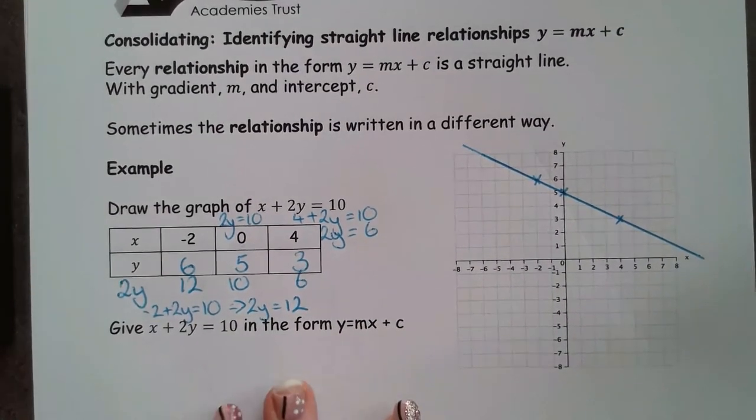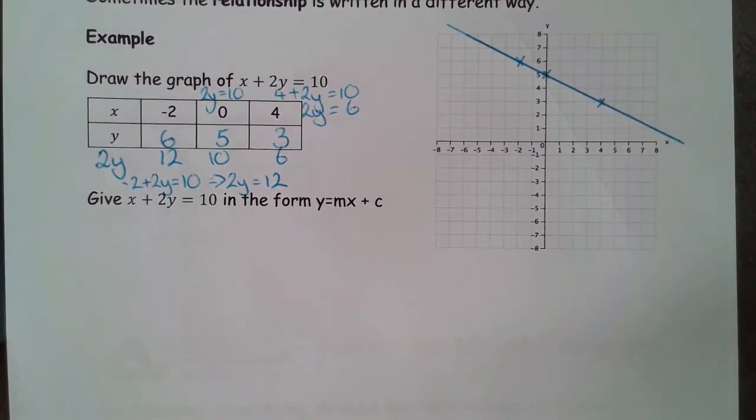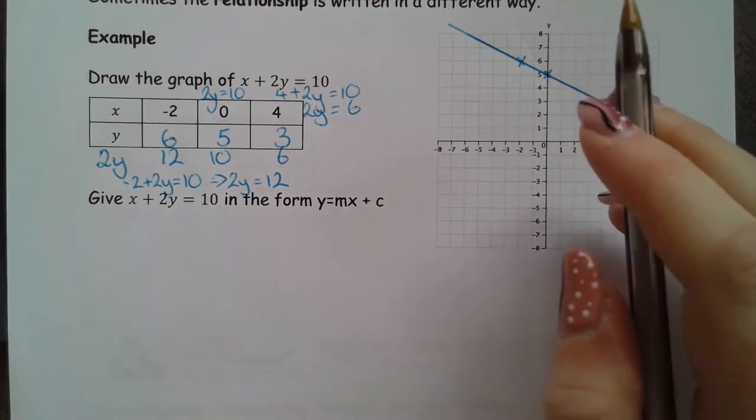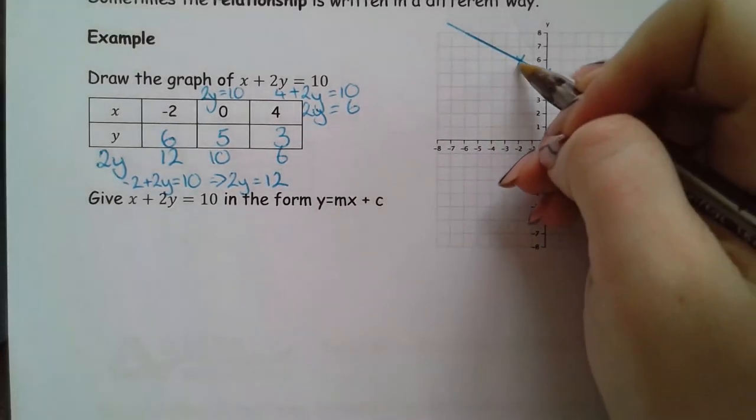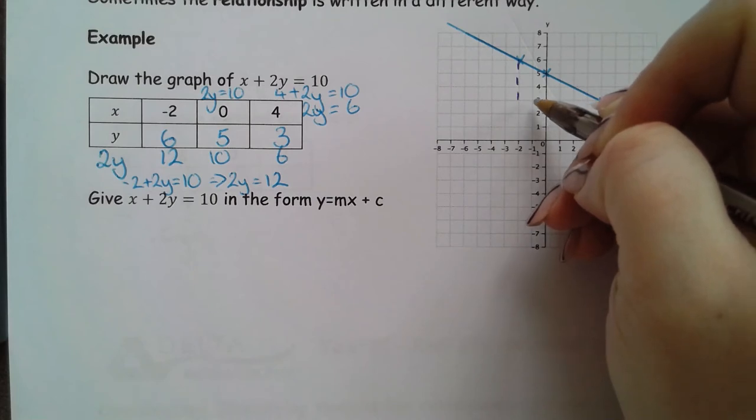So, my line looks something like this. It then asks us to write this in the form y equals mx plus c. So, let's use those two different methods again. So, to start off with, I'm going to be looking at drawing myself a triangle here.